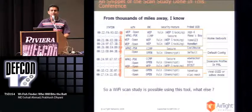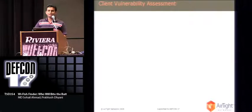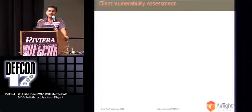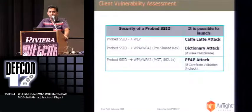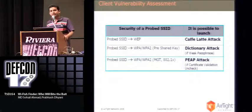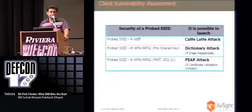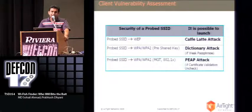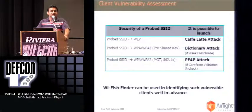Yes — how about doing a client security assessment or vulnerability assessment? There are attacks known to work against clients configured to connect to security-enabled Wi-Fi networks. For example, if your client is configured to connect to a WEP-encrypted network, someone can try a Caffe-Latte attack. If configured for WPA pre-shared key networks, someone can try a dictionary attack using Aircrack-ng. And if you think you are safe using WPA2 802.1x, someone can actually try a PEAP attack. This tool can identify such vulnerable clients in advance, enabling proper security assessment.